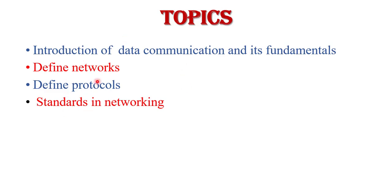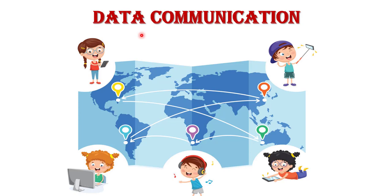So all these topics I will cover in this video. Let's come to the topic — data communication. The word 'data communication' is the combination of data and communication. Communication is a process of exchanging information from one point to another. If this communication is in the form of data or bits, it is called data communication. In a computer network, this exchange is done between two devices over a transmission media.